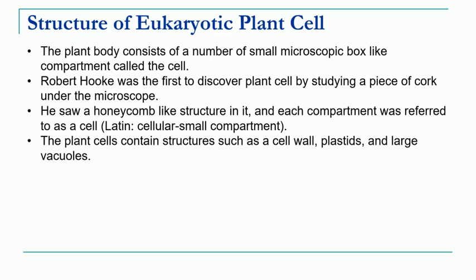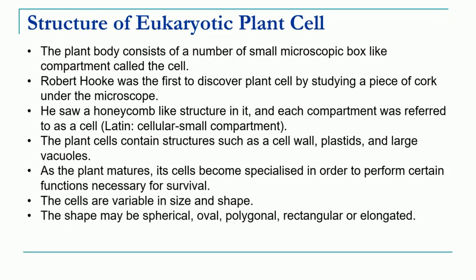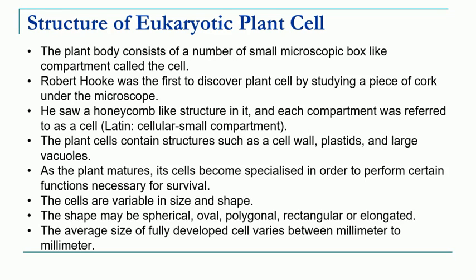Plant cells contain structures such as cell wall, plastids, and vacuoles, which are very large in size. As the plant matures, the cells become specialized to perform certain specialized functions in the plant body. Different types of cells in plants are variable in their shape as well as size. The shape of plant cells can be spherical, oval, polygonal, rectangular, or sometimes even elongated. The size varies between one millimeter to even larger.